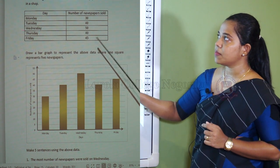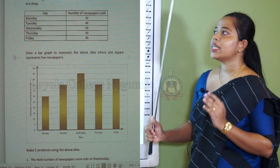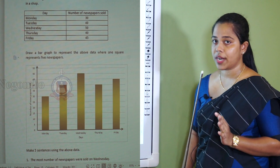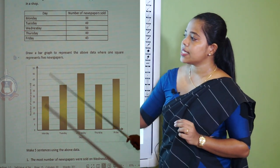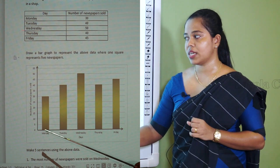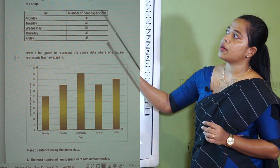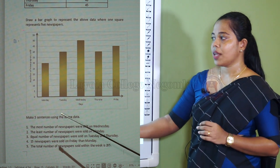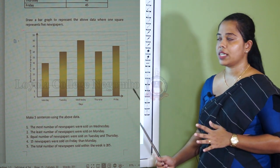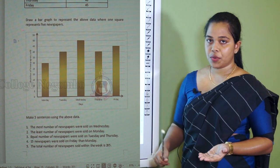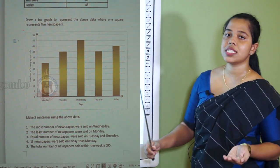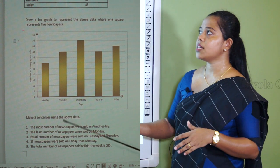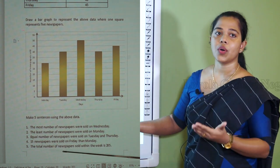First consider the numbers given, and decide what scale you should take to draw the graph so that it is short and neat — that is, what number should you represent from one square. You decide this based on the given data. Here, another new question is given: make five sentences using the above data. In the previous graph I gave you questions to answer, but here I have asked you to make your own sentences using this graph and the data table.